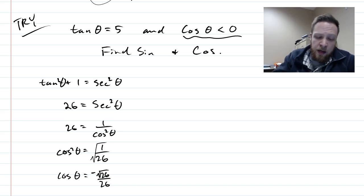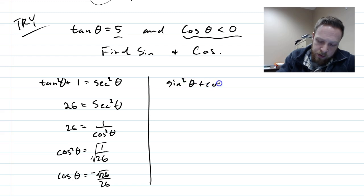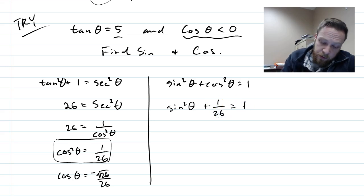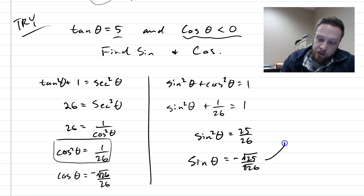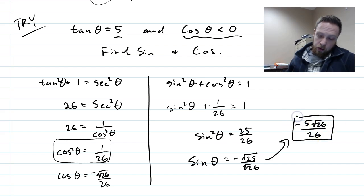Since tangent is positive five and cosine is negative, sine must also be negative — sine over cosine equals tangent, so both must be negative for the ratio to be positive. Using sine squared plus cosine squared equals one, and cosine squared equals one over 26: sine squared equals 25 over 26. Square rooting gives negative five over root 26, and rationalizing gives negative five root 26 over 26.